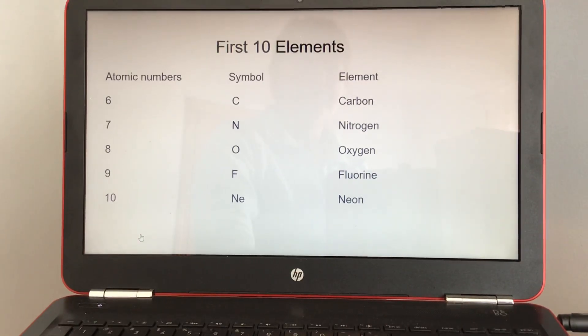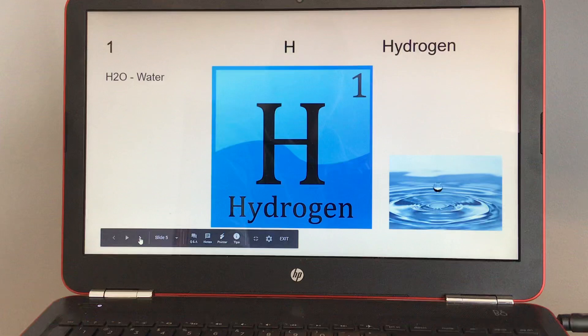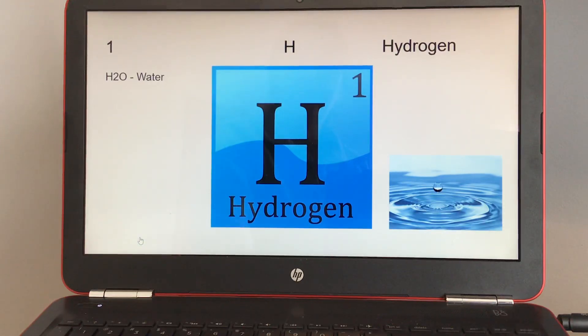Atomic number eight is capital O for oxygen, and we went over the oxygen cycle. And number nine is capital F for fluorine, and number ten is the symbol capital N lowercase e for neon. And we made neon lights for Halloween. And then I have the first ten in order.